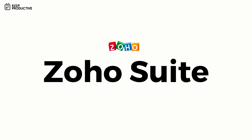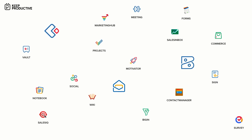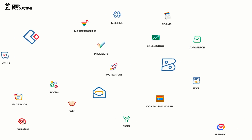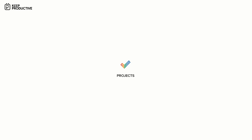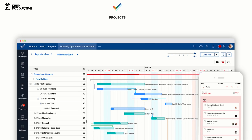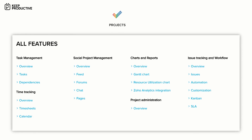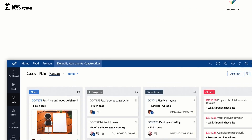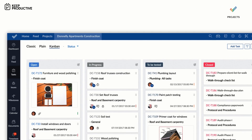Our sponsor for February 2020 is Zoho Suite, which is a range of products covering sales, help desks, email, and much more. They wanted us to focus on Zoho Projects — a way for your team to manage projects in and out of the office. Features include task management, time tracking, Gantt charts, reports, issue tracking, and Zoho Analytics integrations, with success stories from construction to software development. Thanks to Zoho Suite for sponsoring this month on Keep Productive.